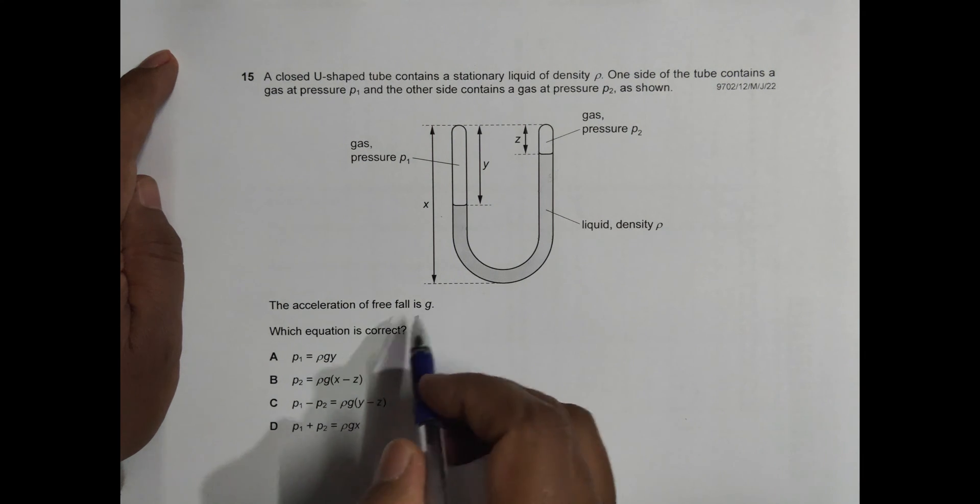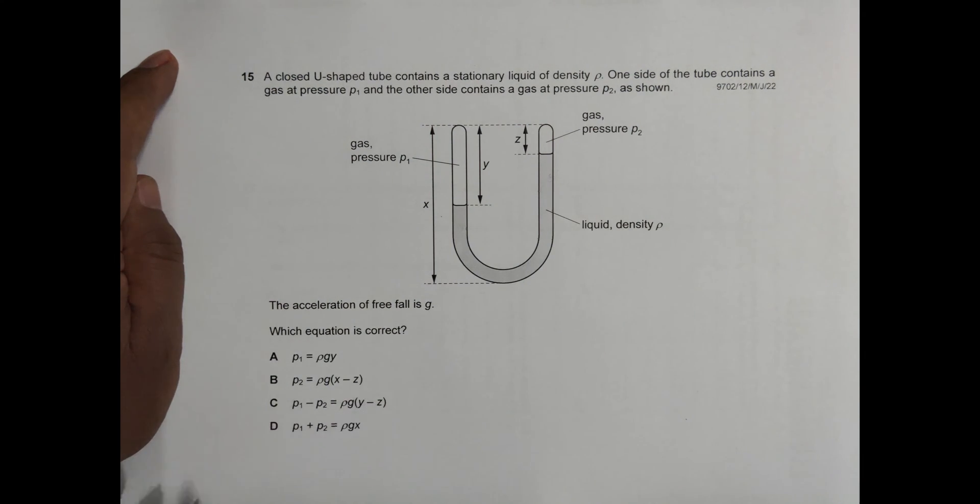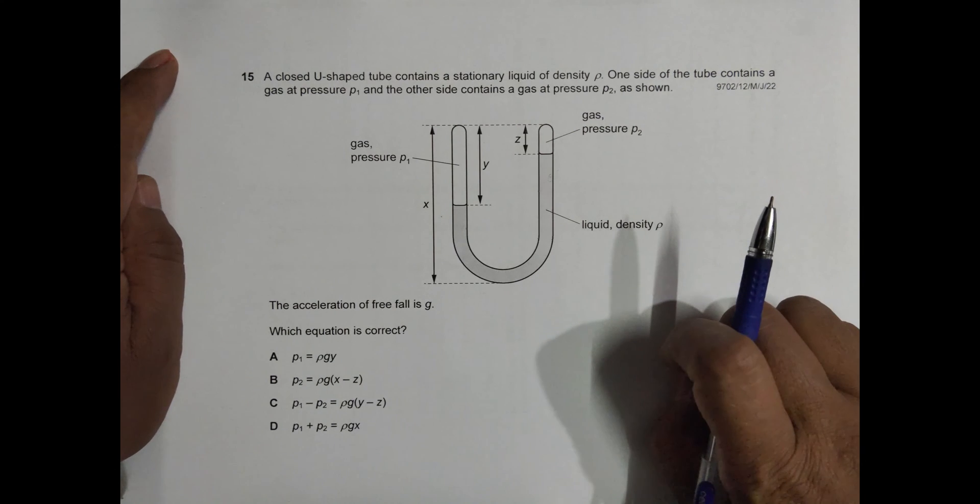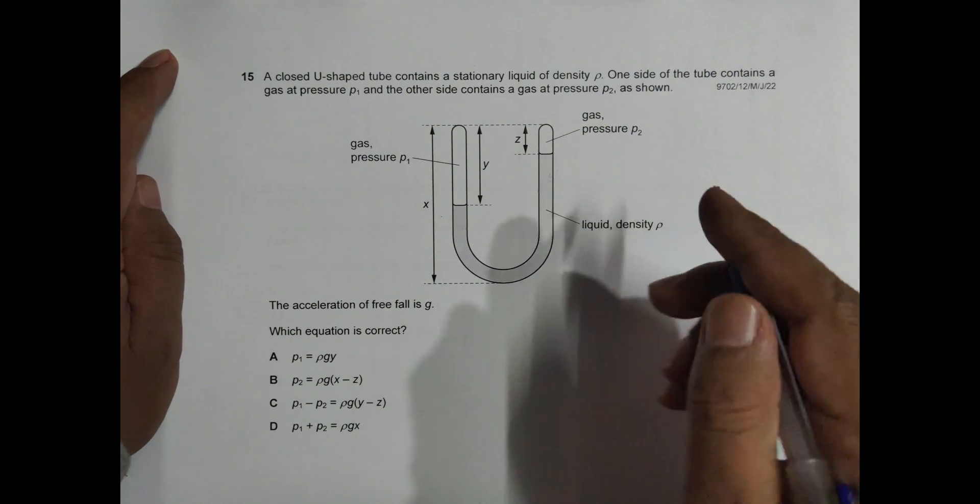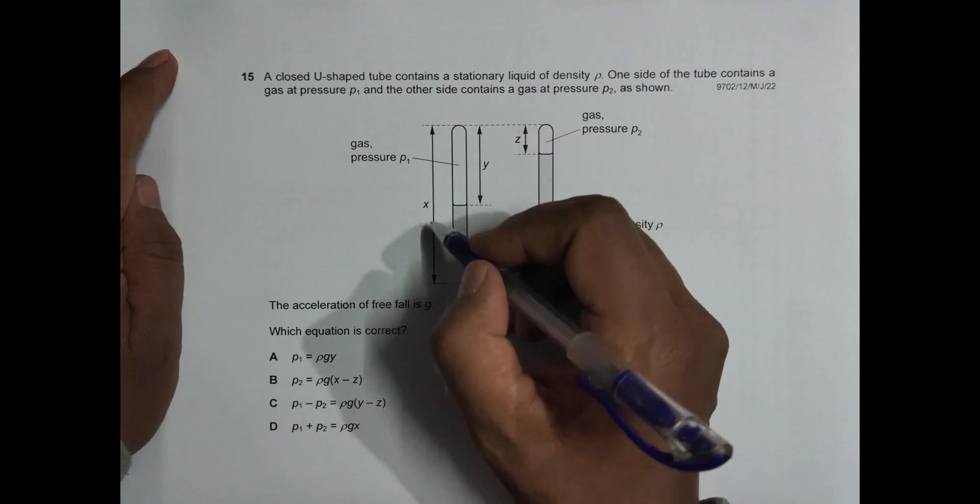The acceleration of free fall is g. Which equation is correct? So we have to find the correct equation. Since it is about ρgy or ρg times some height, it is about pressure. That's why we approach by finding the pressure at the bottom.